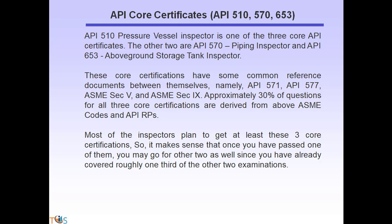API 510 is one of the three core certifications. The other two are API 570 piping inspector and API 653 above-ground storage tank authorized inspector. Approximately 30 percent of questions for all three core certifications come from the same ASME codes and API recommended practices — specifically ASME Section 5, ASME Section 9, API 571, and API 577. Most inspectors plan to get all three core certificates, so once you pass one, you've already covered 30 percent of the material for the other two.